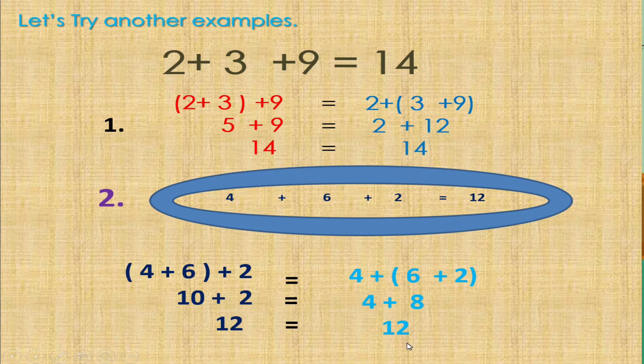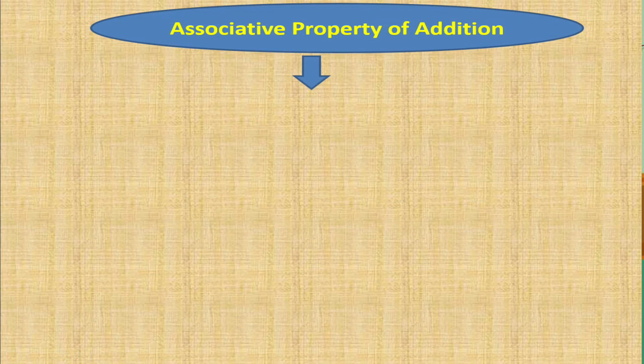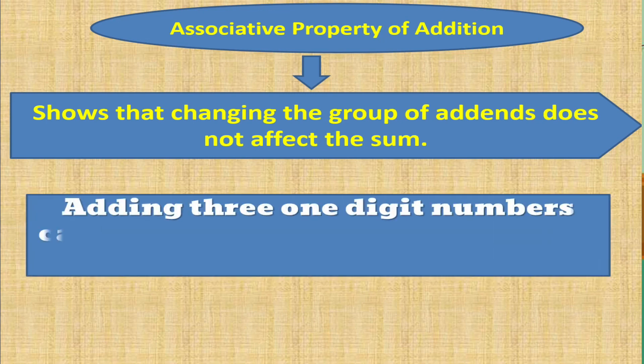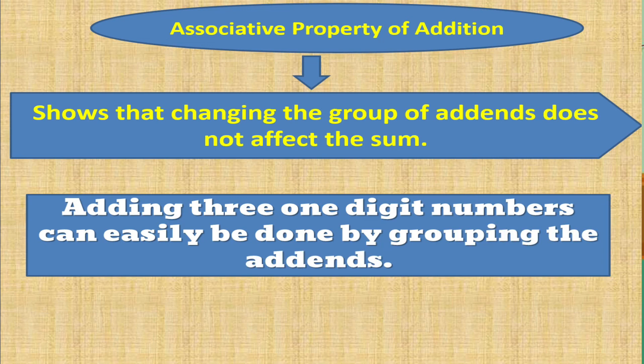Mga bata, is there any idea about the associative property of addition? Associative property of addition shows that changing the grouping of addends does not affect the sum. Kahit balibalikta natin ang grupo ng ating mga addends, lalabas pa rin ang parehong sagot. Adding 3 one-digit numbers can easily be done by grouping the addends. Thank you, mga bata. I hope you learned something from our lesson. See you again next time. Have a good day.